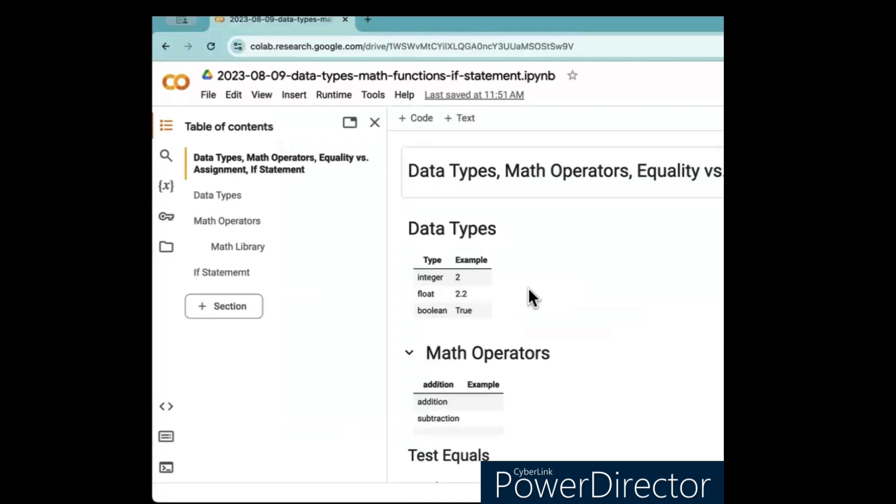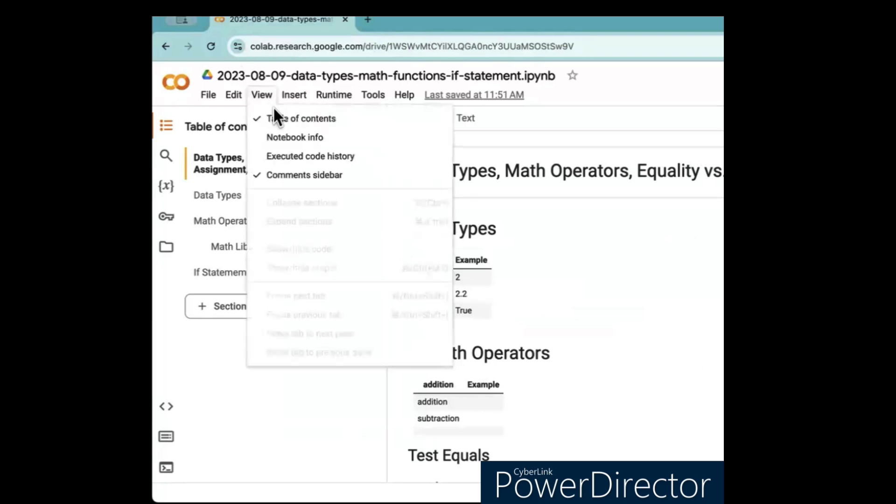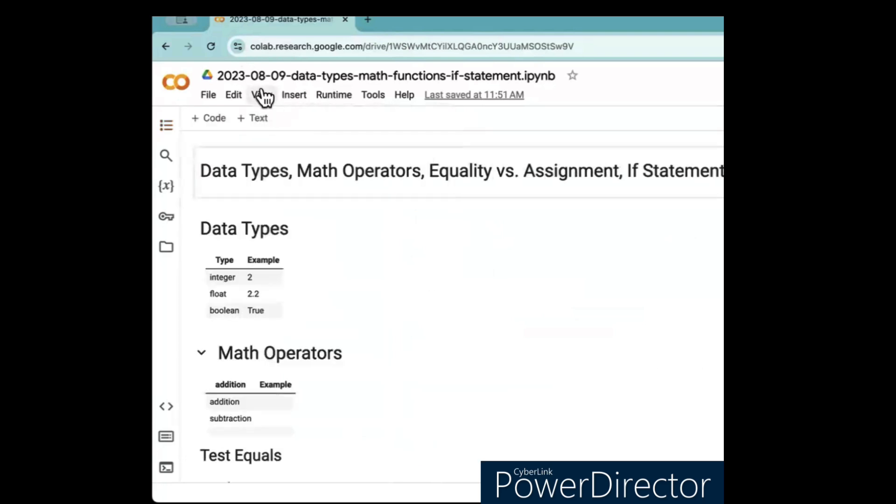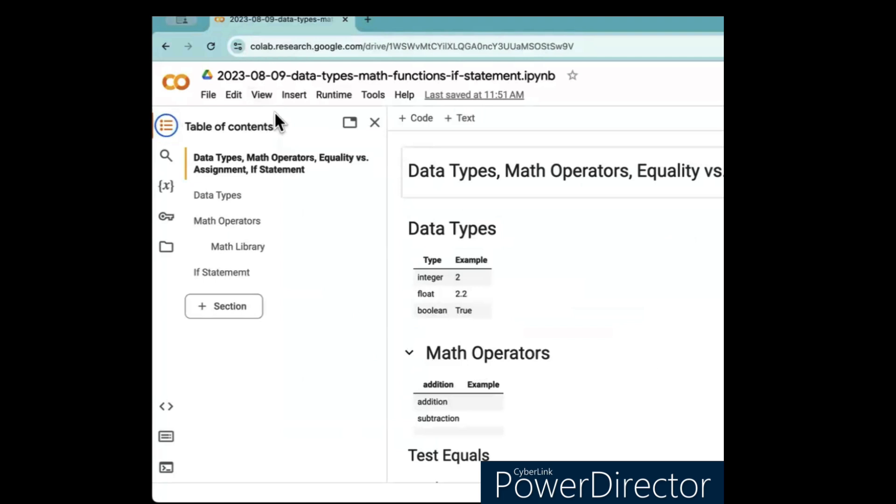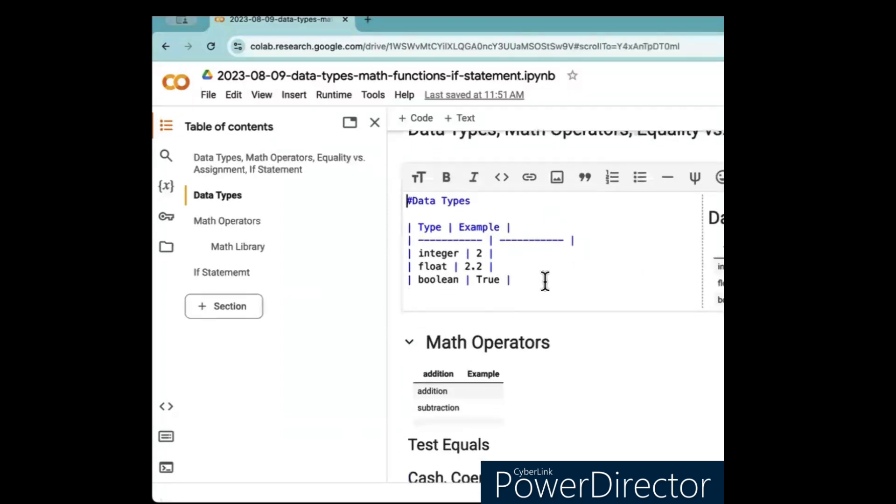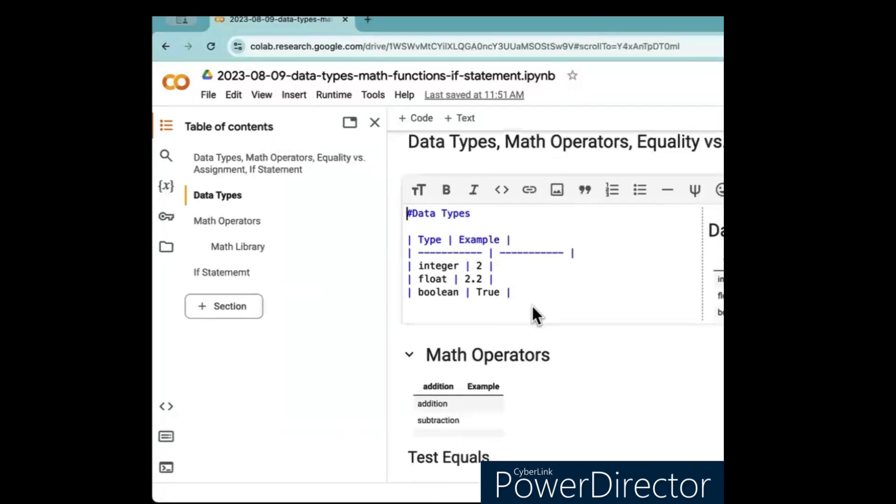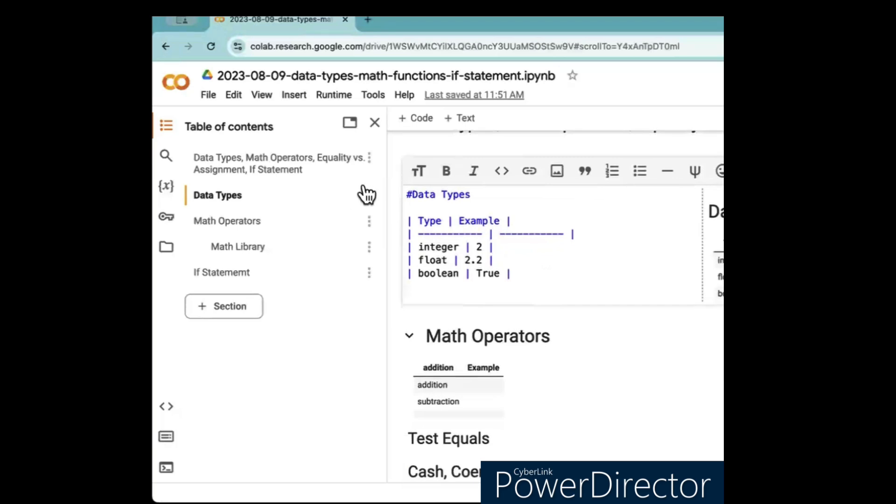All right, so look, this is CoLab. Notice I made a table of contents view, table of contents on or off. Just a way to have a table of contents. Okay, so talk about data types. If I click here, this is markdown, it's not code. First, let me get rid of the table of contents.